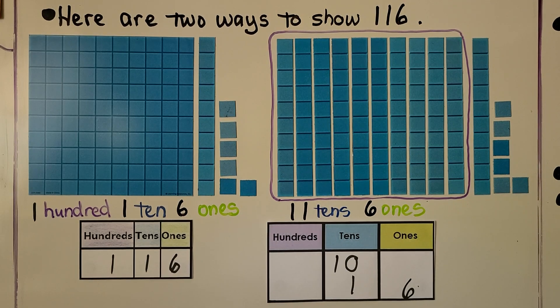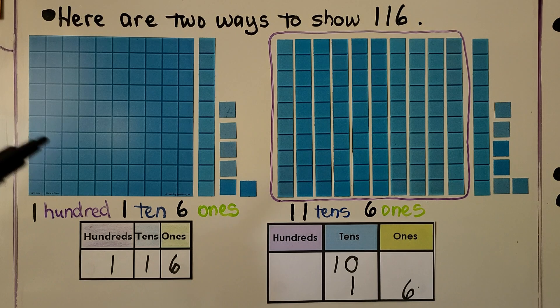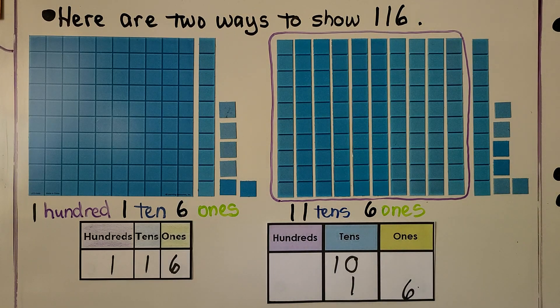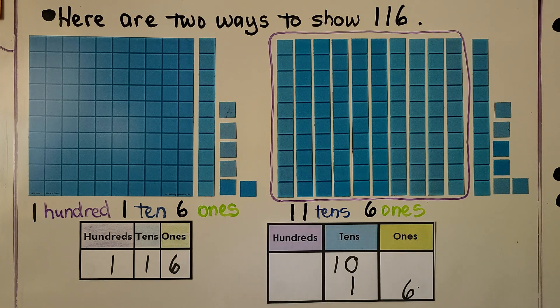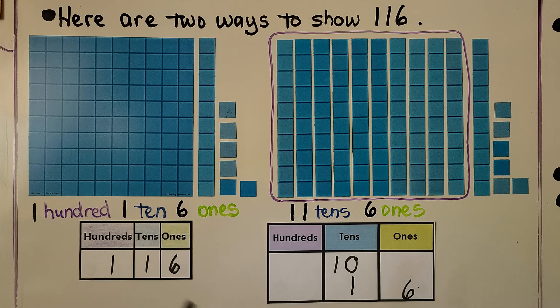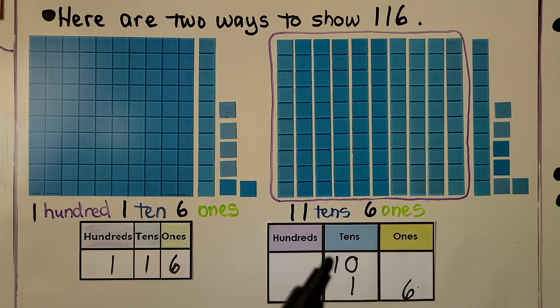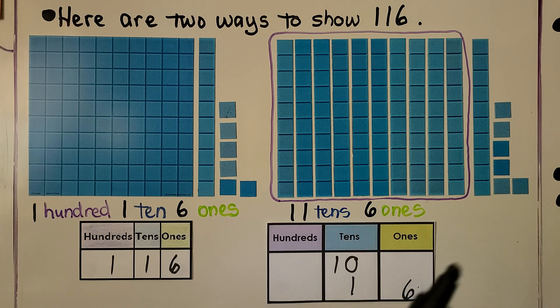Here are two ways to show one hundred sixteen. We can show it as one hundred, one ten, six ones. We can also show it as eleven tens. We change this one hundred into ten tens, and we had one ten before. Now we have ten, eleven tens in all, and six ones.